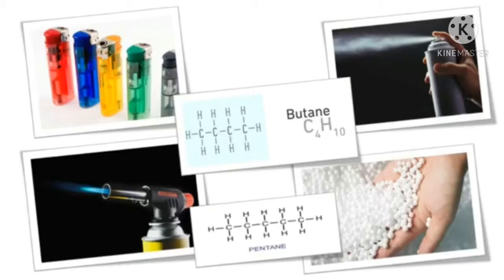Butane is a gas at room temperature and atmospheric pressure. They are highly flammable, colorless gases that quickly vaporize at room temperature. Butane is used as a fuel gas and propellant in aerosol sprays such as deodorants. Pure forms of butane can be used as refrigerants. Butane is also used as lighter fuel for a common lighter or butane torch. Pentanes are liquids with low boiling point, used as fuels and solvents in the laboratory, and also used to produce polystyrene.